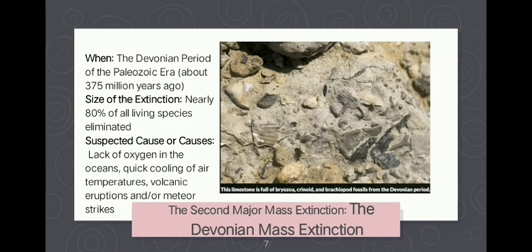The second major mass extinction is the Devonian mass extinction, which occurred during the Paleozoic era about 375 million years ago. Nearly 80% of all living species were eliminated. Suspected causes include lack of oxygen in the oceans, quick cooling of air temperatures, volcanic eruptions, and meteor strikes. The first wave may have been caused by plants colonizing land, leaving fewer autotrophs to create oxygen for sea life, leading to mass death in the ocean.